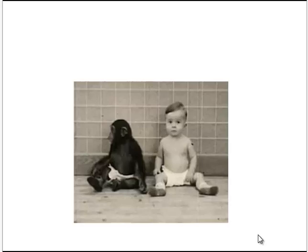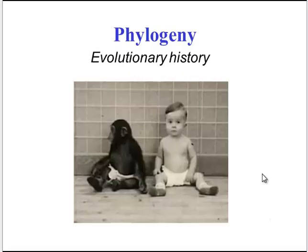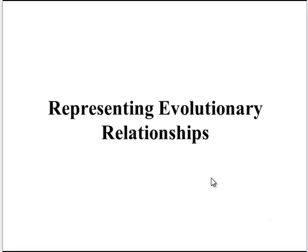Chimpanzees are one of humans' closest relatives in terms of evolution. How do we show this relationship and how do we know this relationship? These are questions we'll explore in our video on phylogeny, which is evolutionary history. Let's start by looking at how we represent evolutionary relationships.